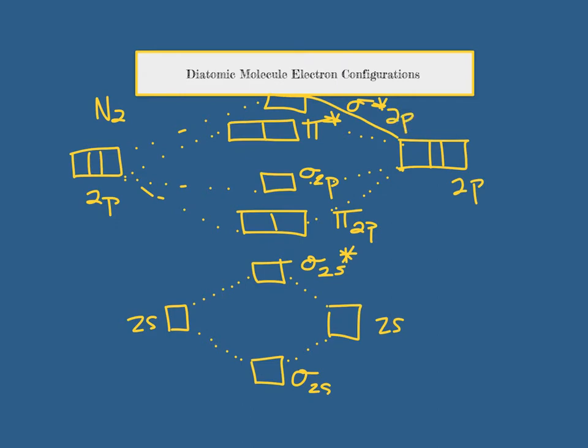Now how we fill up the electron configuration has to do with how many valence electrons each nitrogen can have available. We know that nitrogen has 5 valence electrons from its electron configuration. So we can fill up our electrons.